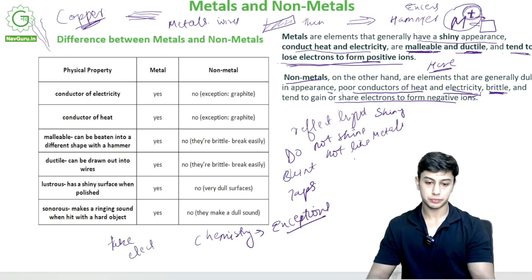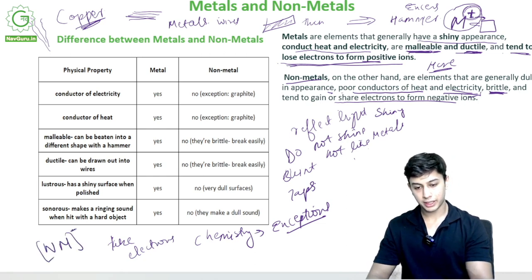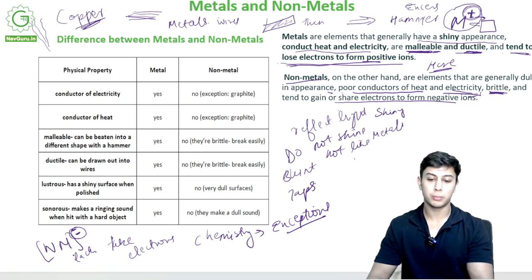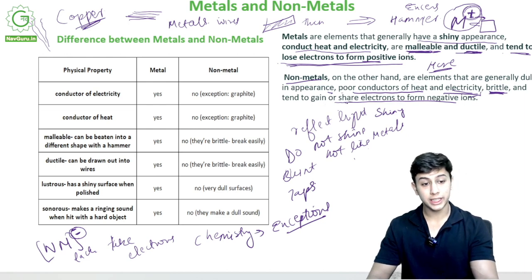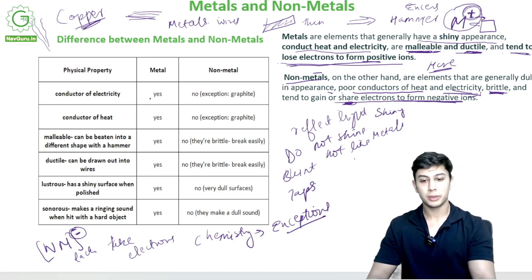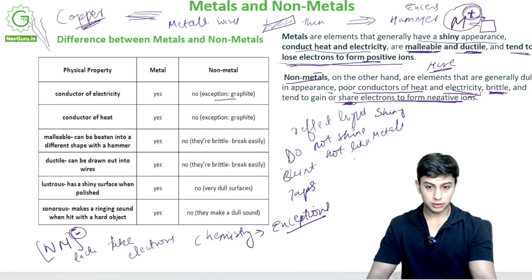Non-metals tend to gain or share electrons to form negative ions. If I represent non-metals as NM, there will be a negative sign — they are in a dearth of electrons; they lack electrons and need more to form bonds and compounds. So they gain or share electrons. Always remember: non-metals form negative ions, metals form positive ions.